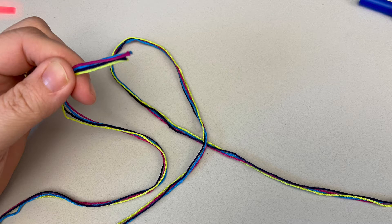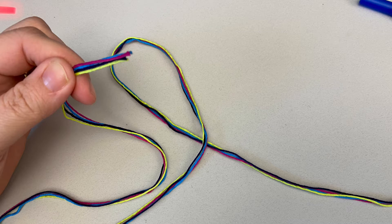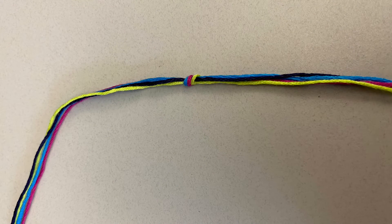We're gonna make some friendship bracelets today. So the first thing that you want to do is choose which colors of the embroidery floss that we provided that you'd like to work with.